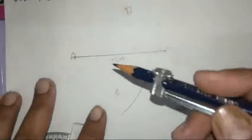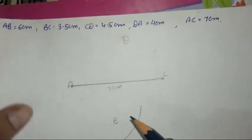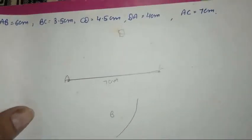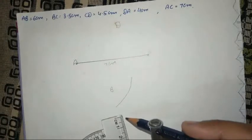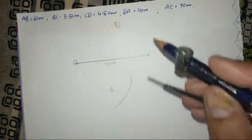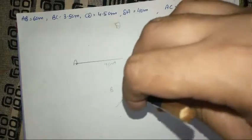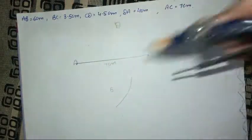After that, BC is given. BC is 3.5 cm. Then we open the compass 3.5 cm to the end point and then we bisect this.